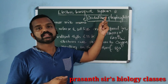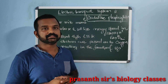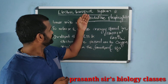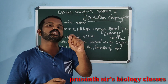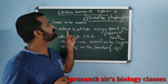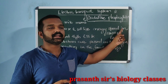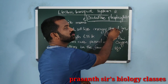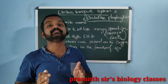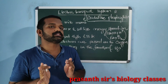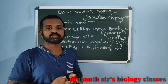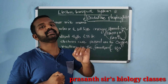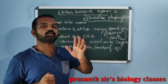Electron transport system is a metabolic pathway that occurs in the inner mitochondrial membrane. The main objective of electron transport system is to release and utilize the energy stored in NADH+H+ and FADH2, the two reduced coenzymes produced during Krebs cycle. These two, NADH+H+ and FADH2, are oxidized to release energy.